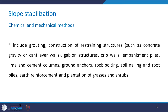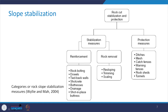Other chemical and mechanical measures include lime and cement columns, ground anchors, rock bolting, soil nailing and root piles, earth reinforcement, and plantation of grasses and shrubs. Let us take a look in a summarized fashion at what methods can be adopted for rock slope stabilization under different categories.